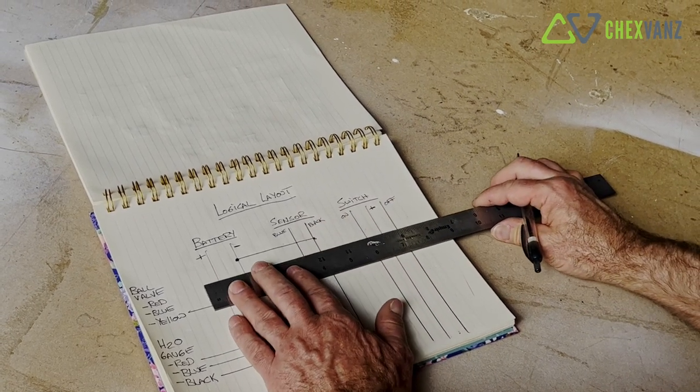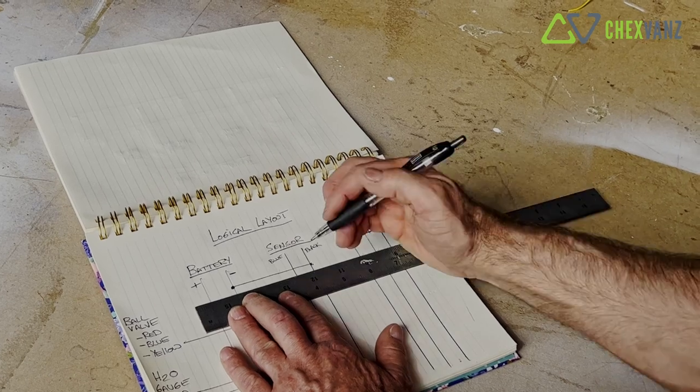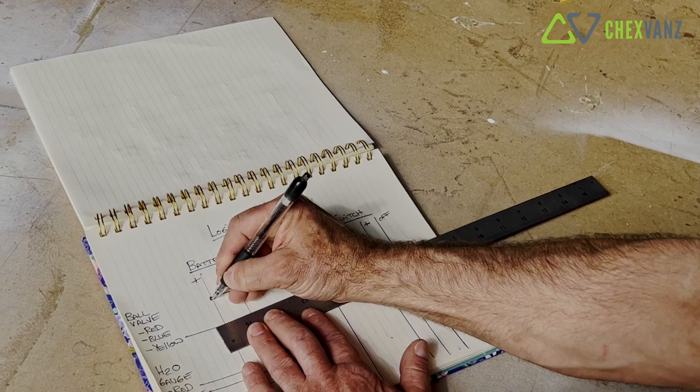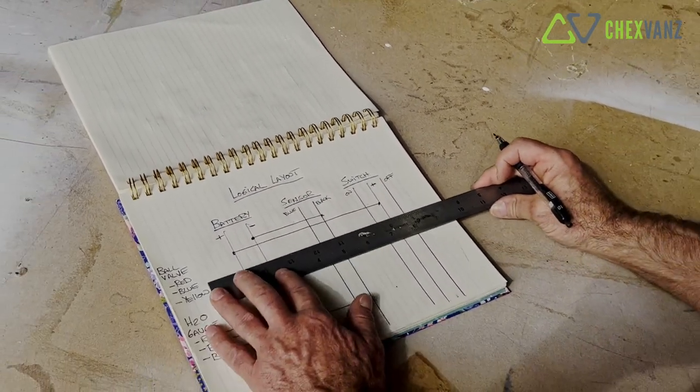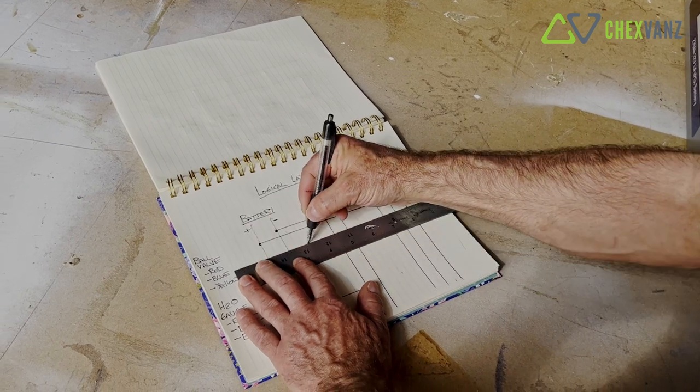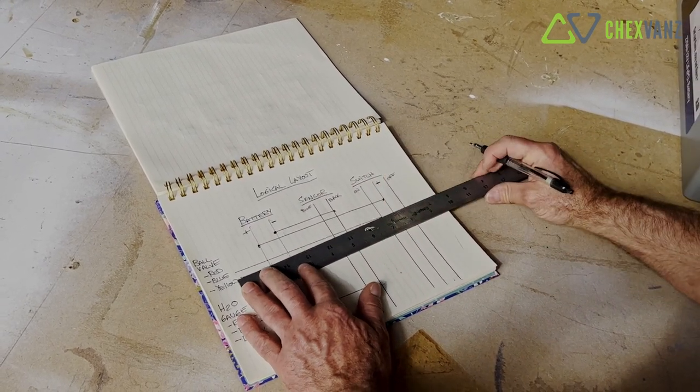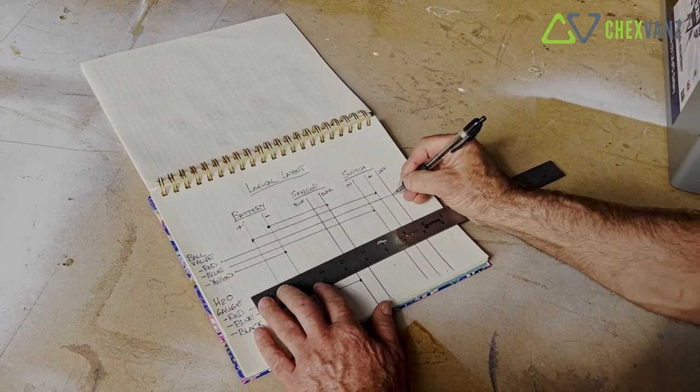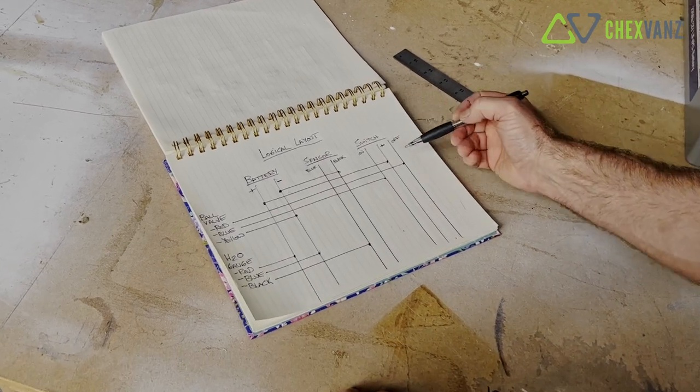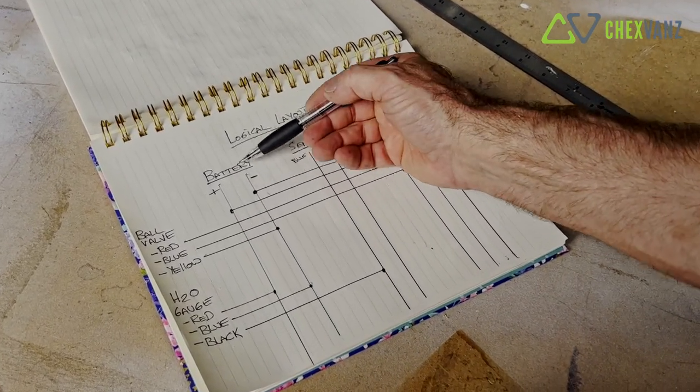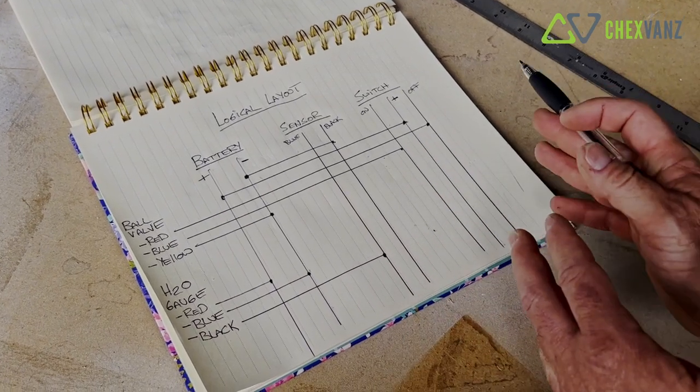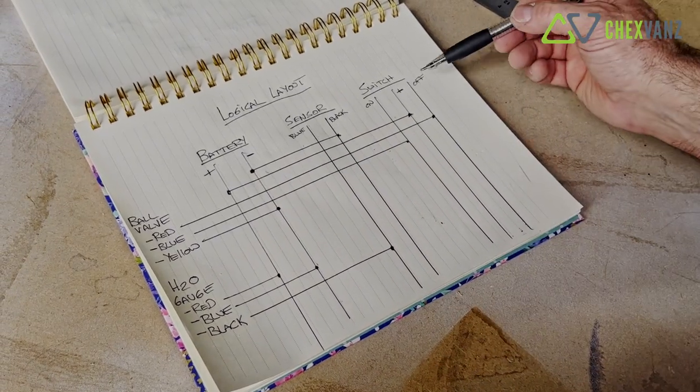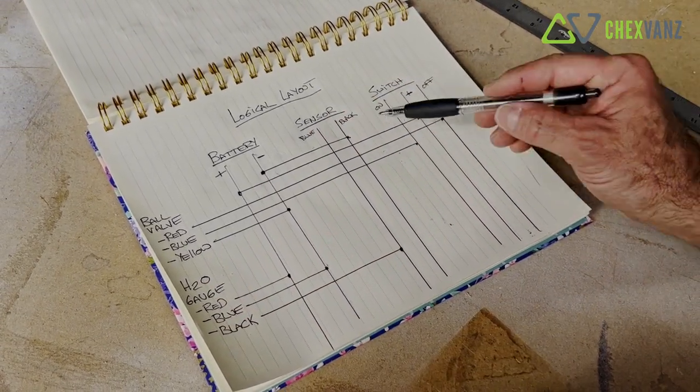And the switch needs a positive power connection. So we'll make a connection from the switch into positive. And then we'll make our connections from the ball valve blue to on, and the ball valve red to off. So here's how we've decided that we can run a single positive and negative power connection to a given location, normally where your switch will live and where your water gauge will live. And then these are how the logical connections are made between the devices.